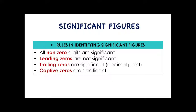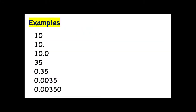I hope it's clear to you the rules in identifying significant figures. Let's have these examples. I have here seven examples of different numbers with different significant figures, and you have to identify how many significant figures there are per example. For the first example, we only have one significant figure because trailing zeros are significant only if the digits have a decimal point, but there is no decimal point in the first example.